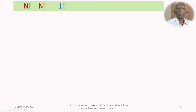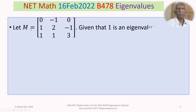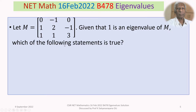The question is: let M be a 3 by 3 matrix with first row (0, -1, 0), second row (1, 2, -1), and third row (1, 1, 3). Given that 1 is an eigenvalue of M, which of the following statements is true?